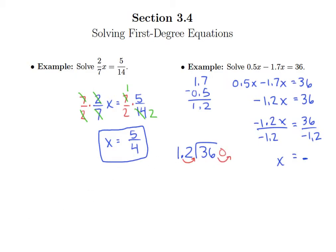So what we have is 360 divided by 12, and 12 goes into 36 exactly three times. Drop the zero of course, 12 goes into zero zero times, so x equals negative 30.